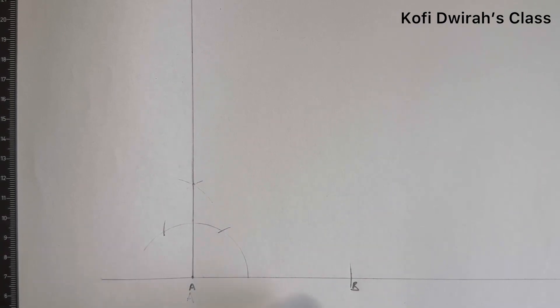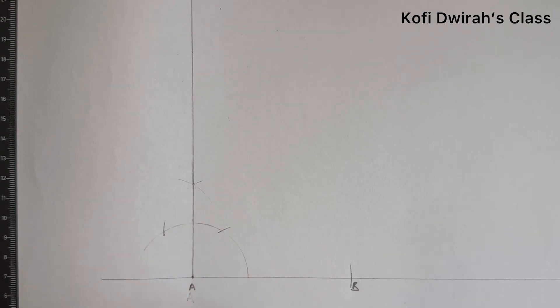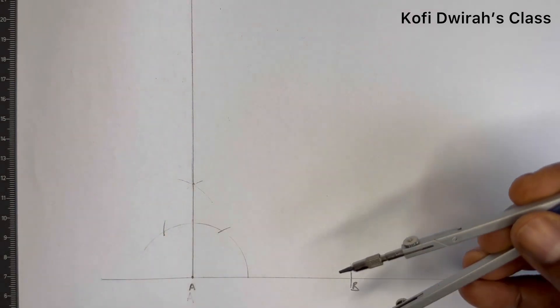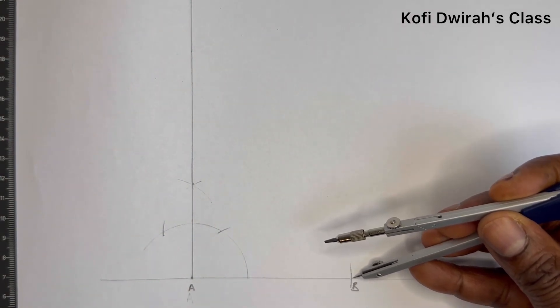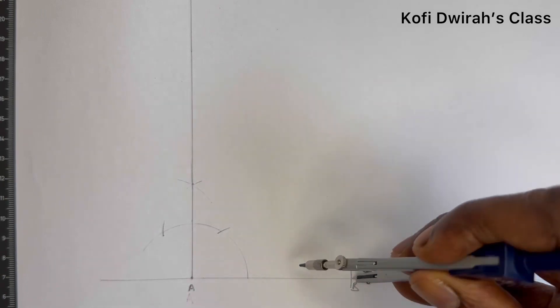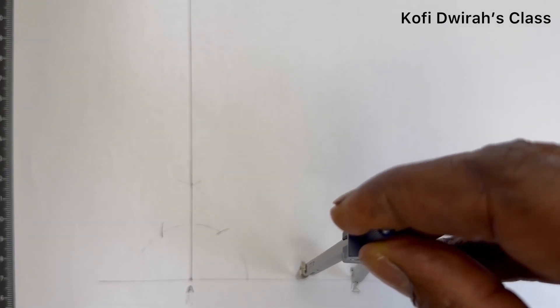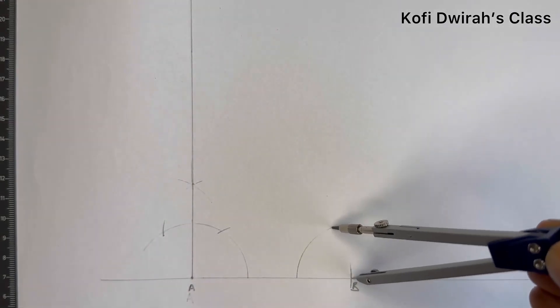So now we have the adjacent AB equal to 8 centimeters, and our theta or the angle is 30 degrees. We are going to construct the 30 degree angle at this point. So at point B, open your compass to any radius, then draw an arc.